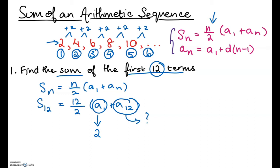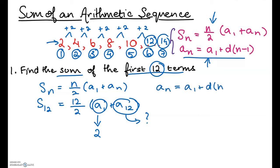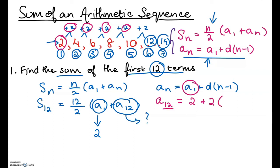We could add 2 repeatedly to find the 12th term, but that's time consuming. Instead, we'll use the nth term formula for arithmetic sequences: a of n equals a of 1 plus d times (n minus 1). To find a of 12: a of 12 equals 2 plus 2 times (12 minus 1), which is 2 plus 2 times 11, equals 2 plus 22, which equals 24. So our 12th term is 24.